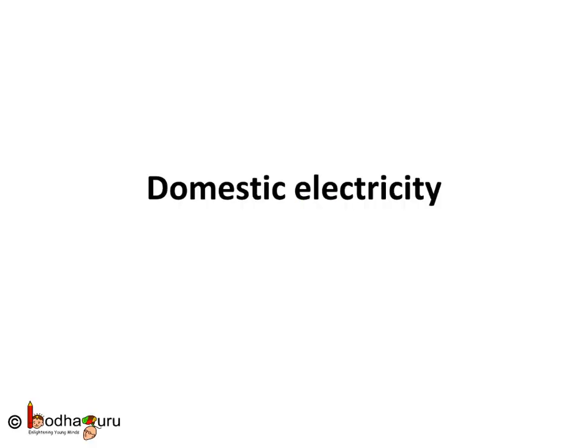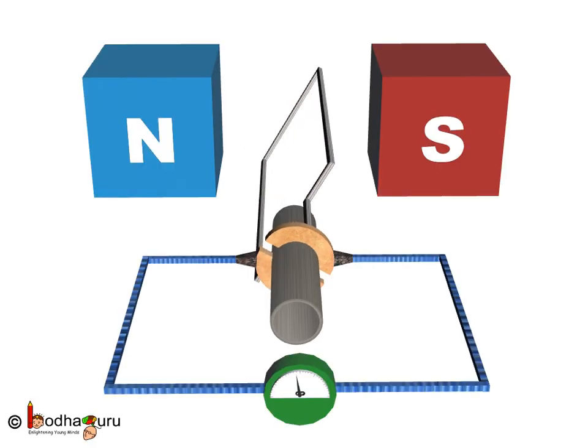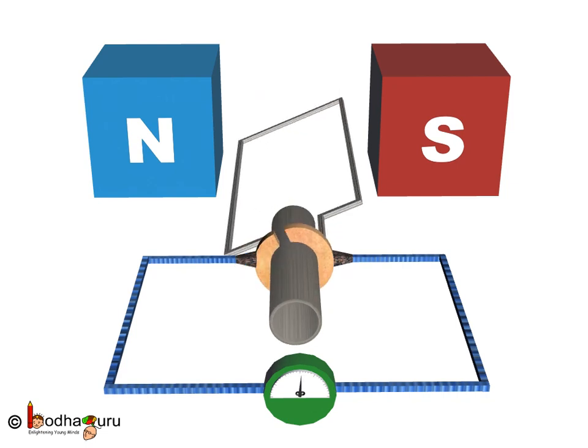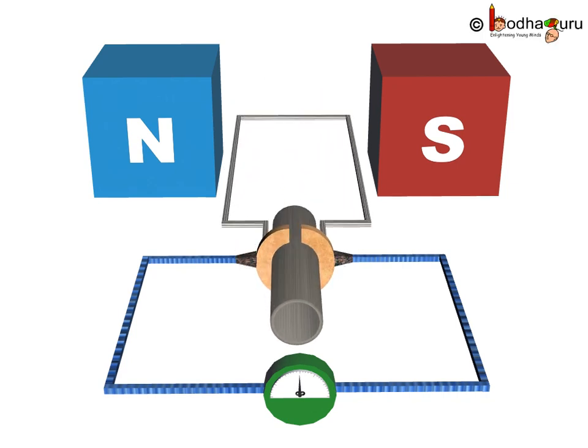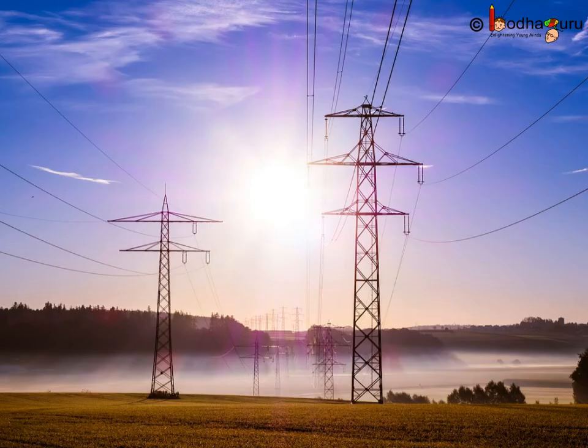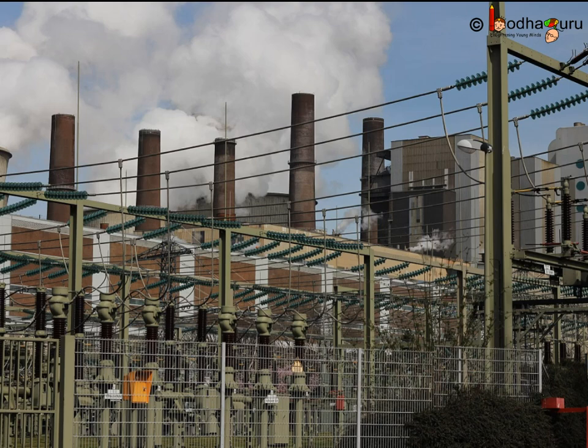Hello everyone. Now we know the basics of electricity production, both direct current and alternating current. You know most of the power stations constructed these days produce alternating current, and there is a reason for it.